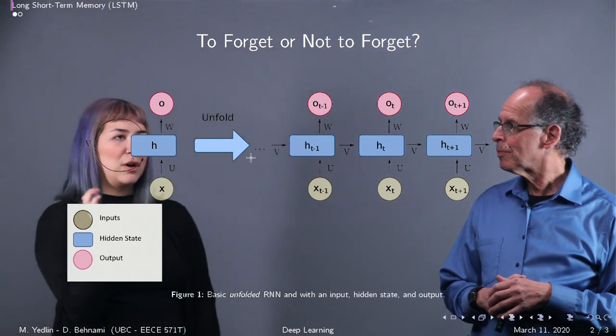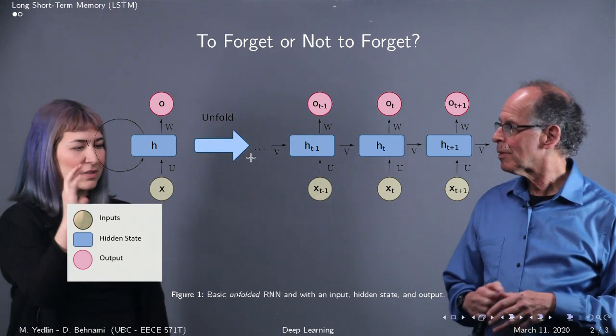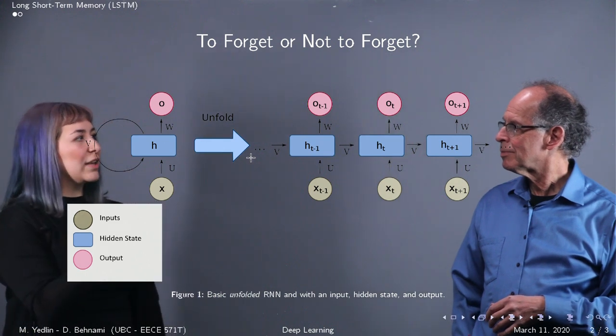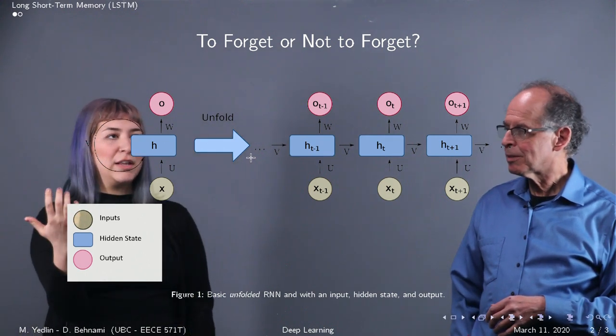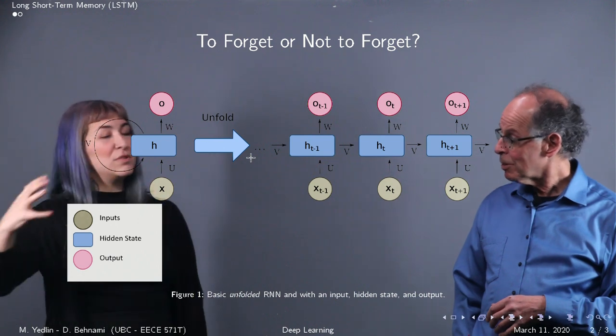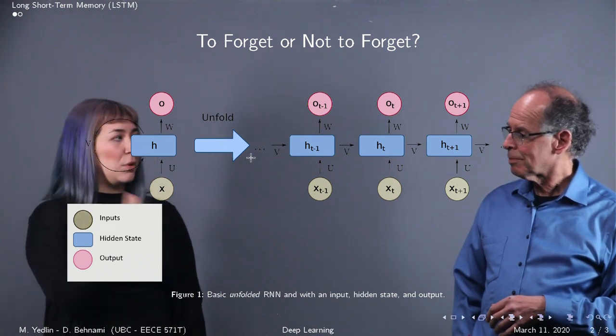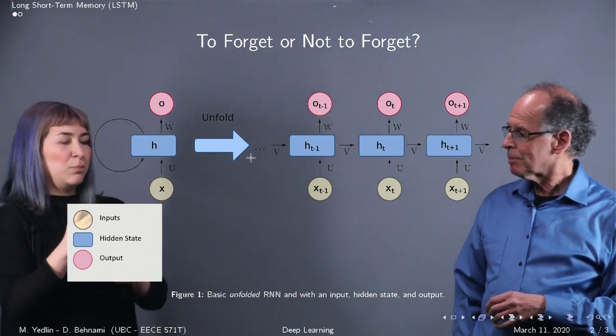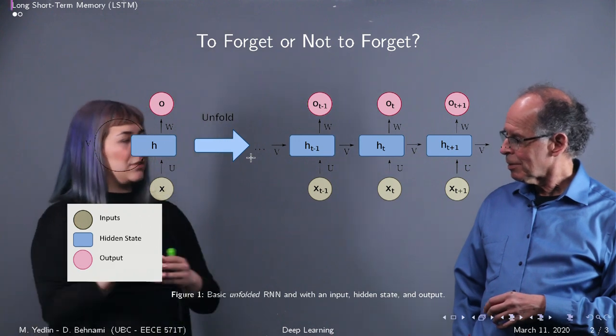We also talked about issues that this RNN architecture on its own can cause. Specifically, we talked about vanishing gradients and how you will start to lose information from early on if you only have that hidden state, the more and more time steps you add to your sequence.